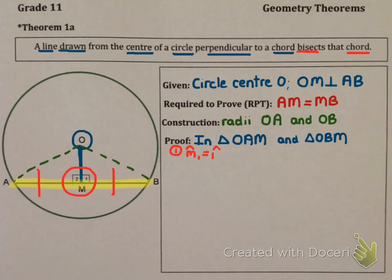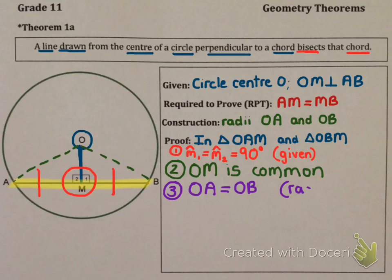We have to come up with three things that are equal in these triangles. Personally, I prefer to do what is given first. Number one, it was given that angle M1 and angle M2 equals 90 degrees. Then anything that could be common—in this case OM is common. And lastly, your construction of OA and OB are equal because they are both radii. This means we have a right angle, OA and OB which are the hypotenuses, and a side that is equal. So we can conclude that triangle OAM is congruent to triangle OBM, and our reason is right angle hypotenuse side.